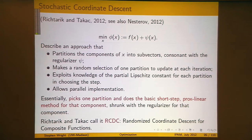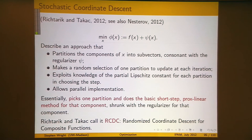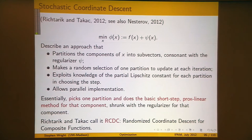I'm going to assume you have some estimates of those quantities. The method also allows parallel implementation, where different processes handle different pieces of the vector x. The basic approach is that you pick one partition, do a basic short-step gradient method — the prox-linear thing — taking account of the regularization term explicitly using the shrink operator. Richterich and Takash call this randomized coordinate descent for composite functions, RCDC.